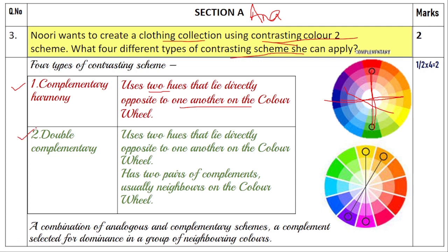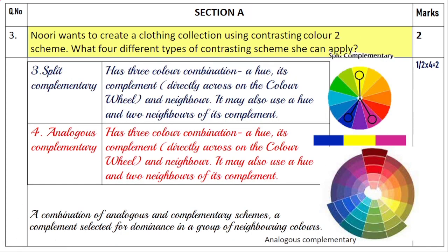The second type is double complementary. It also uses hues directly opposite on the color wheel, but the difference is it has two pairs of complements which are usually neighbors on the color scheme. For example, yellow opposite purple, and adjacent to yellow is yellow-orange whose opposite is blue-purple — so you have two pairs of analogous colors and the colors opposite to them. It is a combination of analogous and complementary color schemes.